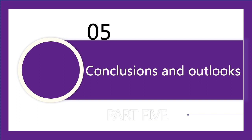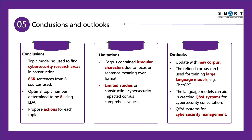Now let's talk about the conclusion and outlooks. To conclude, we used topic modeling to identify cybersecurity research areas in construction. Our corpus consisted of 66,000 sentences from 6 sources, and we determined the optimal number of topics to be 8 using LDA topic modeling. For each topic, we have proposed actionable steps. However, we acknowledge limitations: our corpus contained irregular captures due to a focus on meaning over format, and limited existing studies on construction cybersecurity also affected corpus comprehensiveness. Looking ahead, we plan to update with new corpora and believe our refined corpus could train large language models such as GPT, which could power question-and-answer systems for cybersecurity consultation and management.